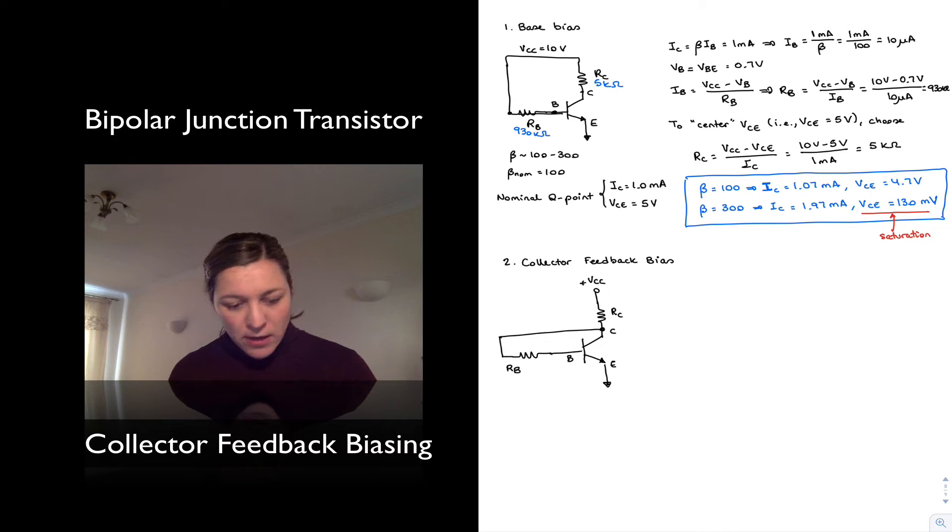So let's go ahead. We have again, since we want the transistor to be in the linear region, we have IC equals beta times IB. And we want that current to be 1 milliamp. That's our nominal Q point of 1 milliamp for IC. And we want VCE to be centered, so 5 volts, since the supply is 10 volts. All right, so we have beta IB, we want that to be 1 milliamp.